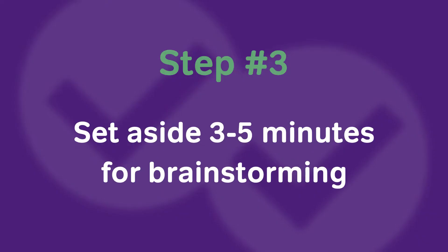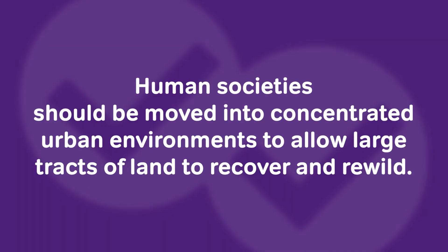Step number three is to set aside three to five minutes for brainstorming. I have what I would describe as a ping pong brain. Every time I see one of these issues that ETS throws at me, my brain instantly starts playing ping pong against itself. Let's take a look at that issue again: 'Human societies should be moved into concentrated urban environments to allow large tracts of land to recover and rewild.' I can either agree or disagree with this statement, but how do I choose? On the one hand, humans living in more concentrated areas might allow some species to reclaim habitat and possibly save some endangered ones. On the other hand, humans living in these areas would probably require vast amounts of water and energy — so where's that water and energy coming from? The cities could just improve their water reclamation and recycling technology, and then they don't even have to bring in as much water.